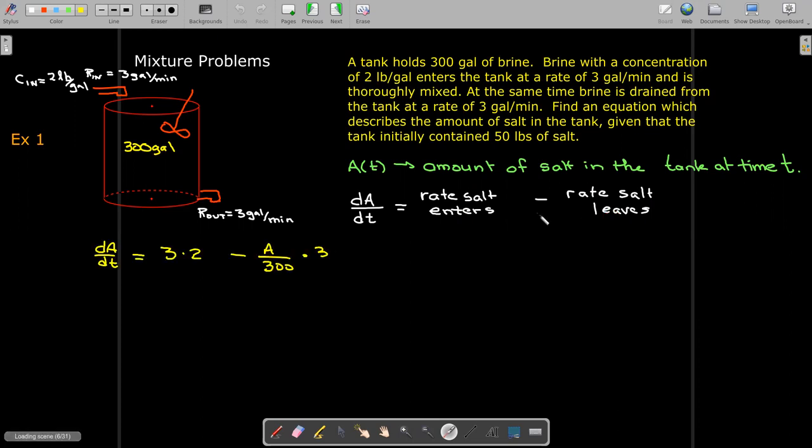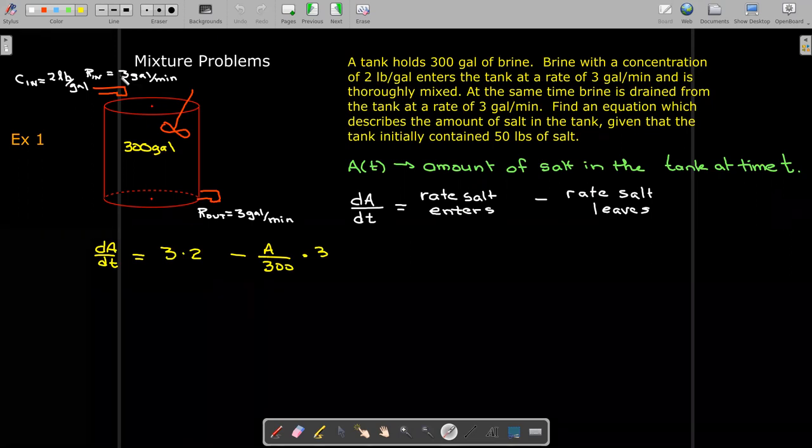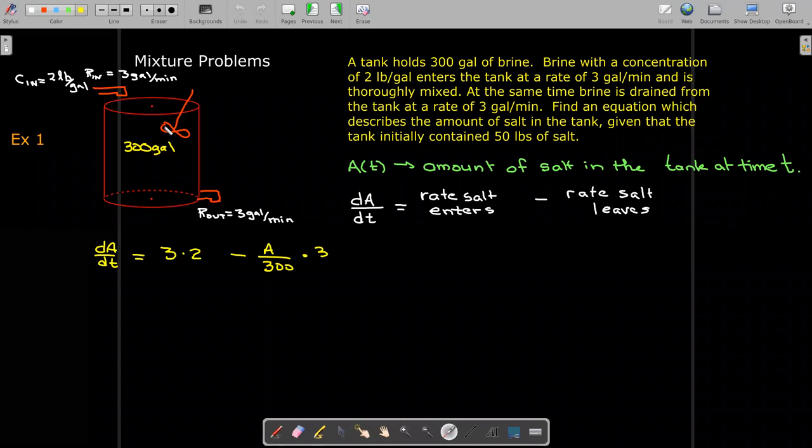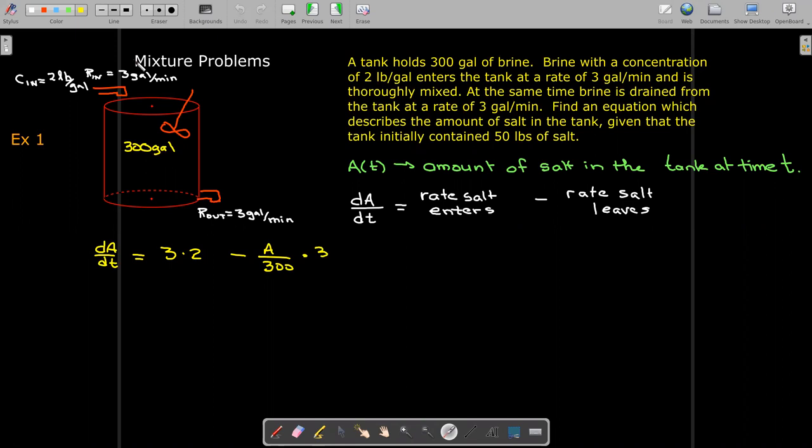Now, the rate at which it enters the tank is straightforward. We're told that the concentration is 2 pounds per gallon and that it is coming in at a rate of 3 gallons per minute. And so if I just multiply those together, I'll get my 6 pounds per minute. So 6 pounds of salt are entering the tank every minute.